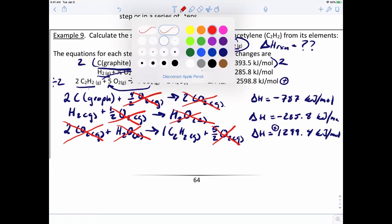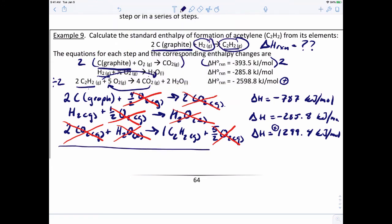So you're left with, this is why this is kind of cool. If we add all this up, we should have two moles of carbon graphite plus H2 yields C2H2 gas. And there it is. That's the reaction that we're shooting for.